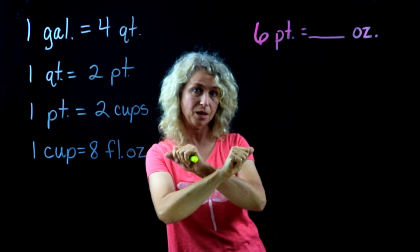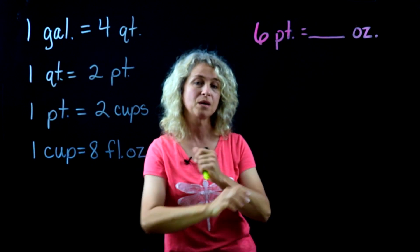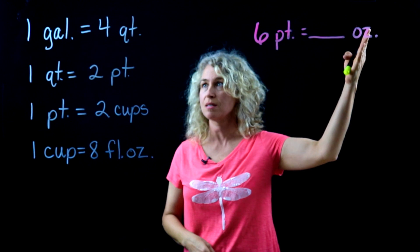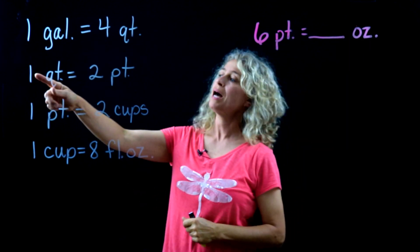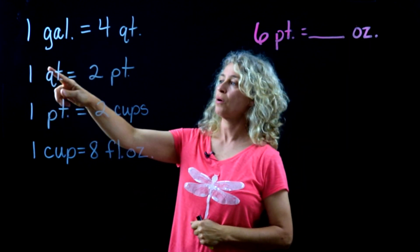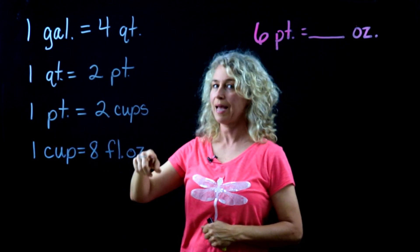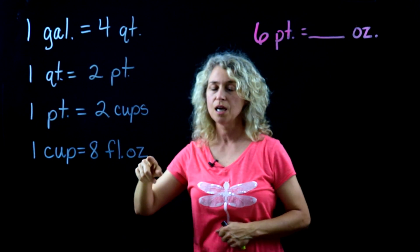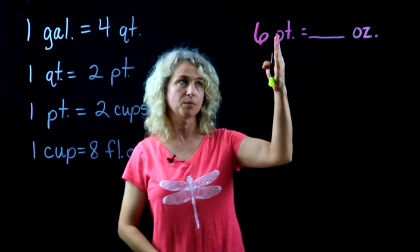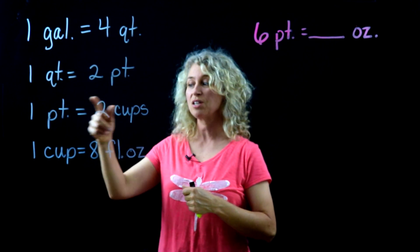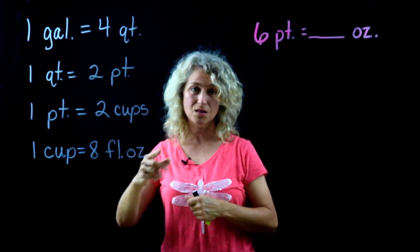But it's not so simple when we move from pints to ounces. If you look, pints are right here: pints to cups, and then cups to fluid ounces. So we want to change the pints first to cups, and then we'll change the cups to fluid ounces. Watch these two steps—we'll still multiply.